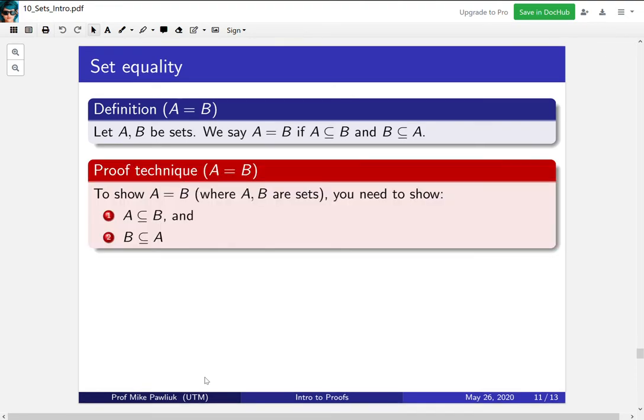To reword it slightly, the proof technique for showing that A is equal to B is you need to show that A is a subset of B and B is a subset of A. You need to do both of those things. This is called the double subset technique. It will show up a bunch in this class.